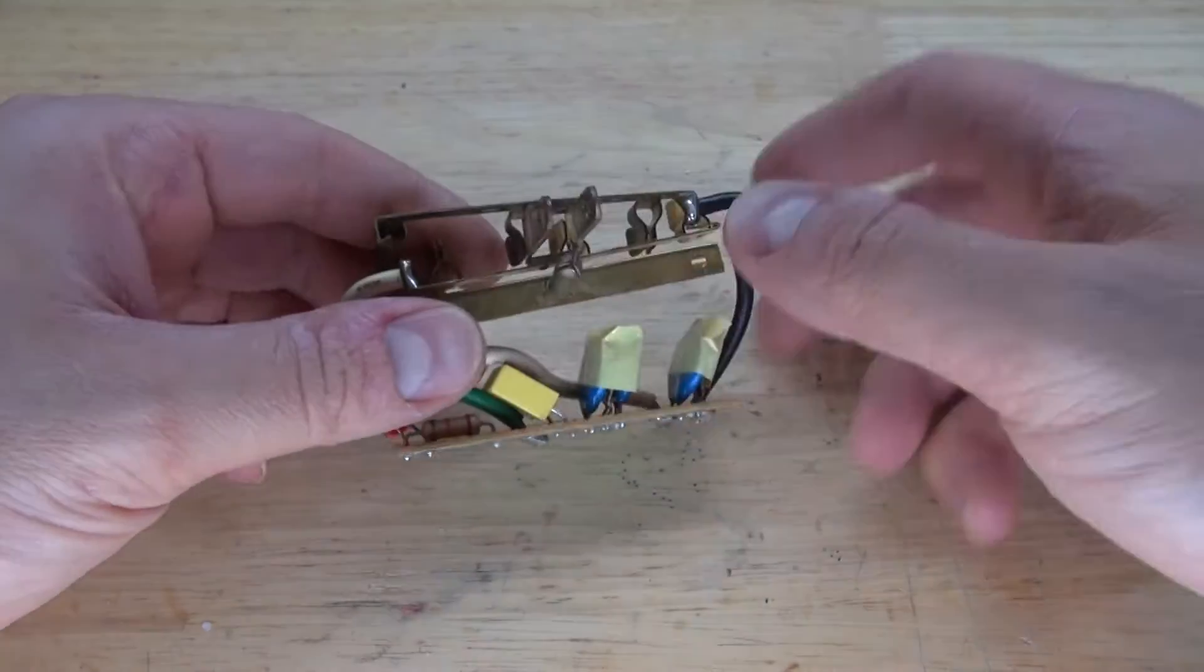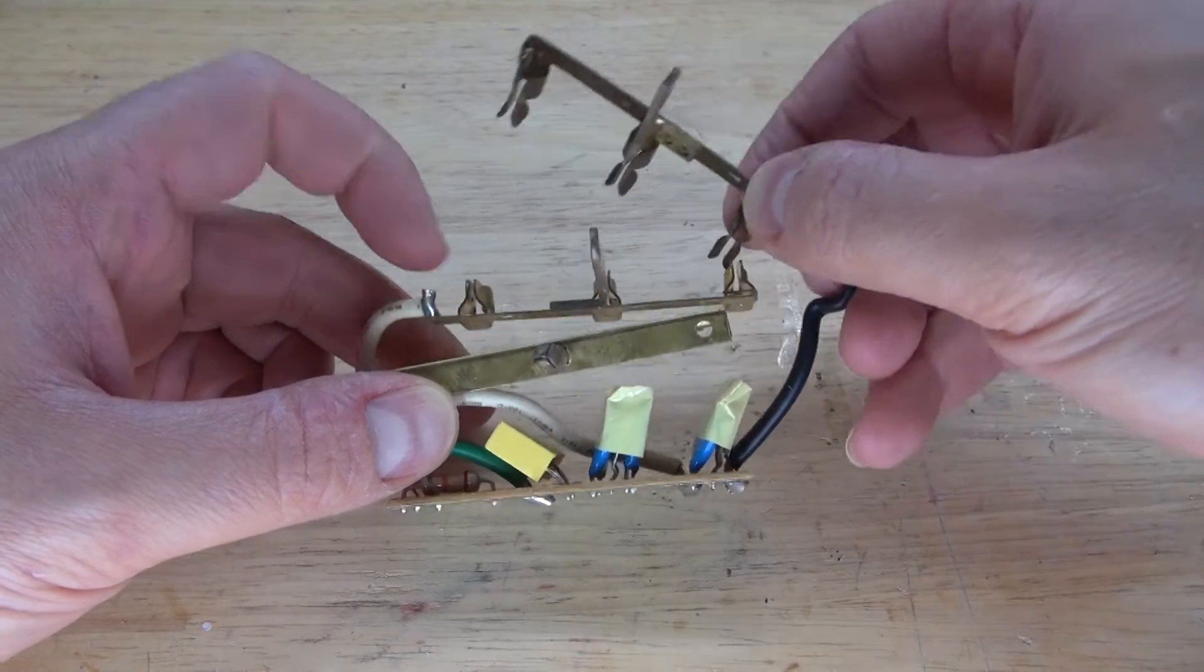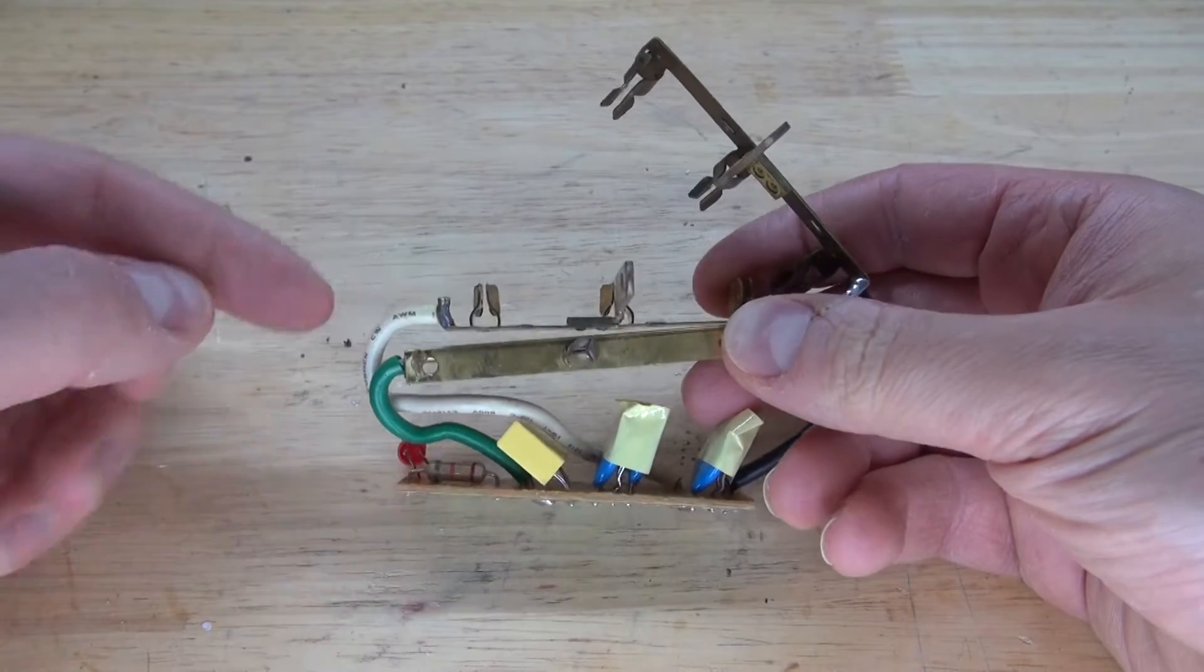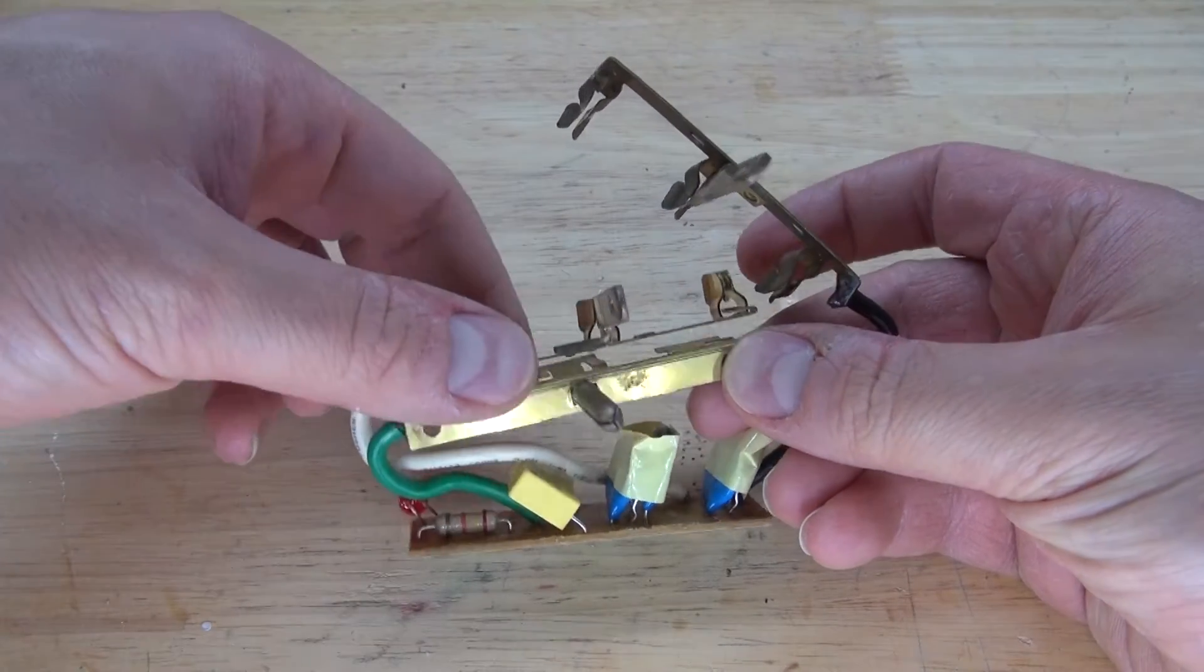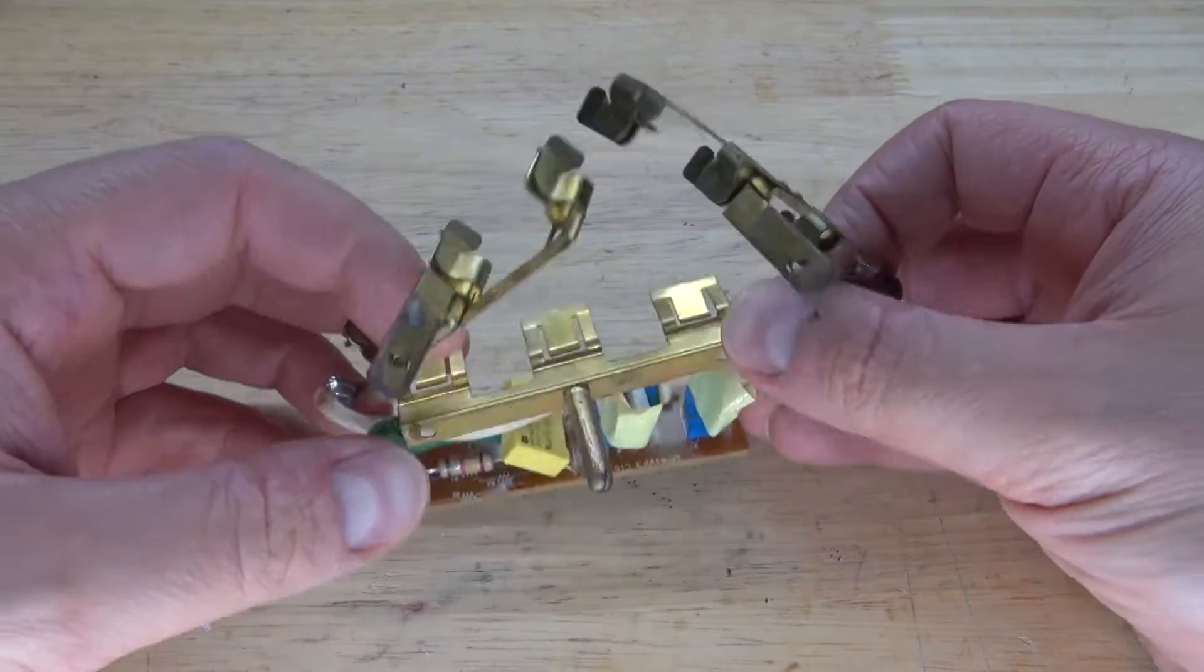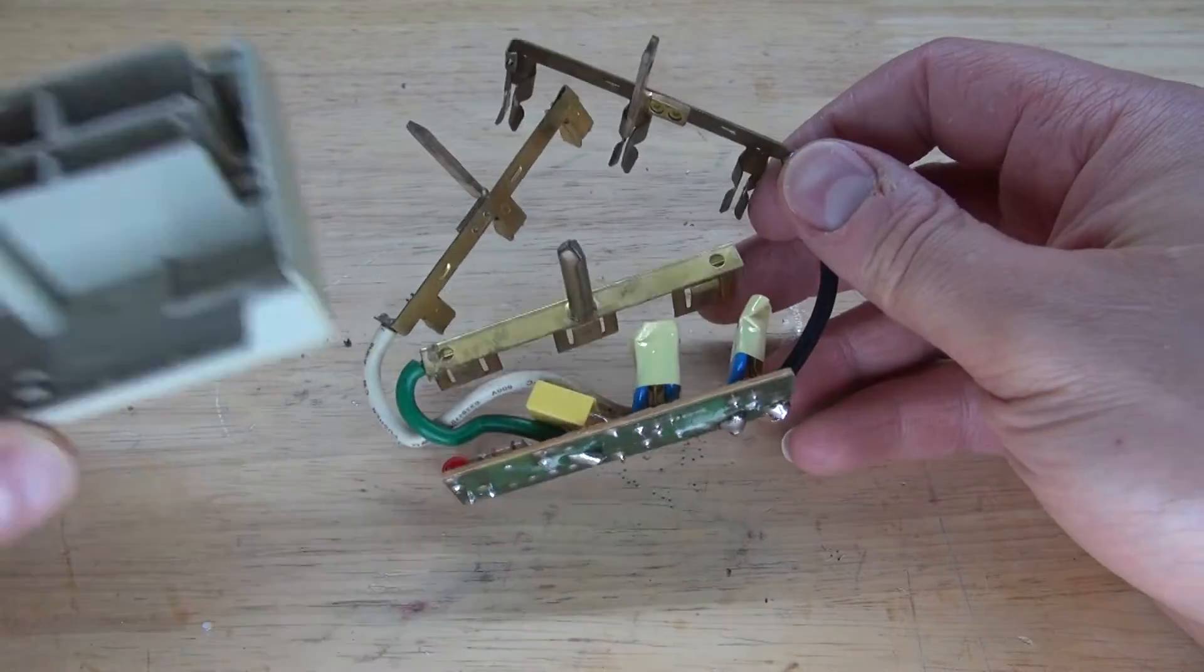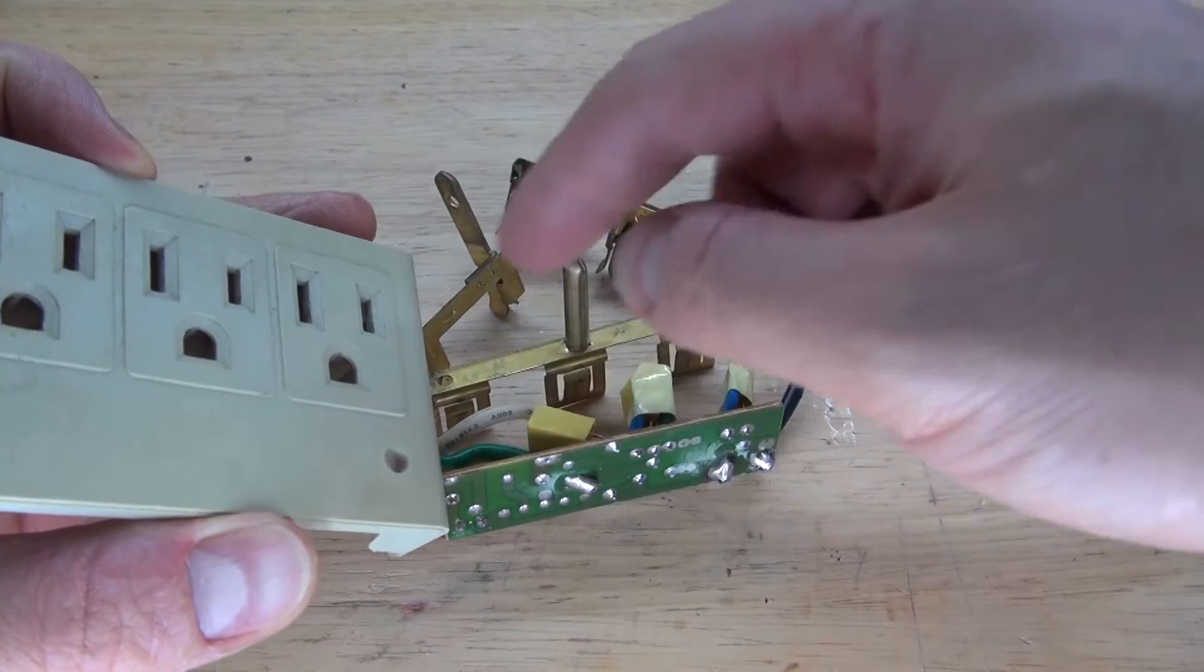This black wire is the live wire, this white wire is the neutral wire, and this green wire is the ground wire. As you can see, each of these wires connects to different pins that connect to the wall outlet.